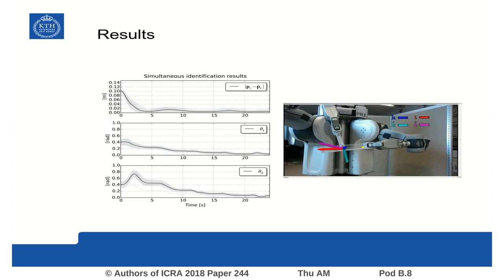We implemented the simultaneous manipulation and identification algorithm in a PR2 robot, equipped with one force and torque sensor. The manipulation task is shared evenly between the two manipulators, and sinusoidal motions are commanded on the two motion directors.